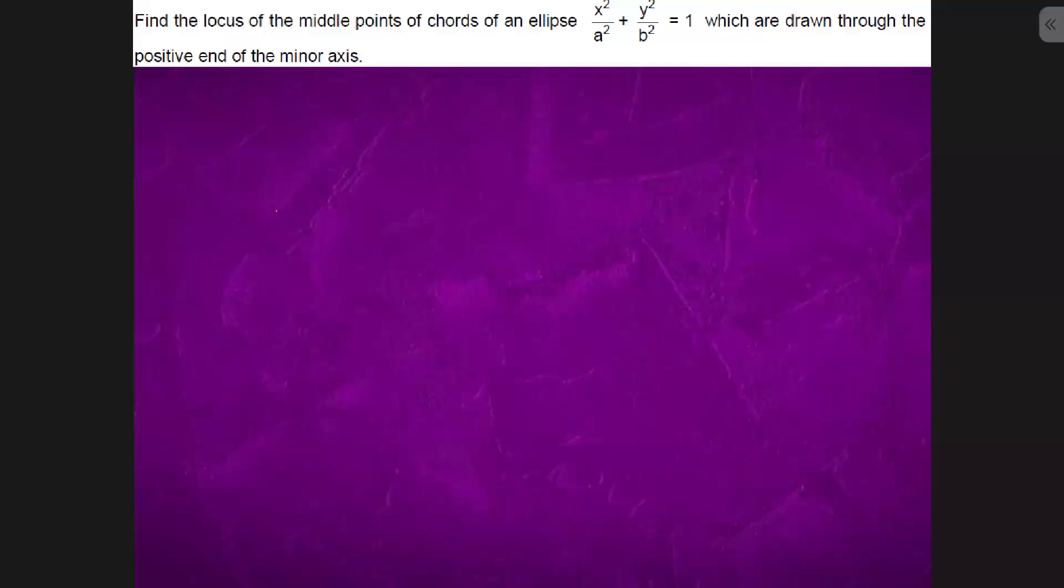So we have an ellipse and a straight line. This is the minor axis. We have a chord whose middle point is at this point.